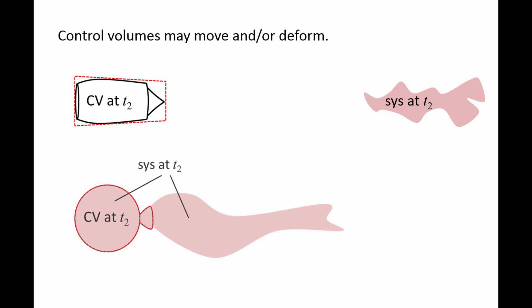Air is allowed to escape, and at a future time t2, the control volume has moved to the left and become smaller, while some of the system has left the balloon.